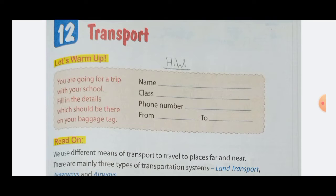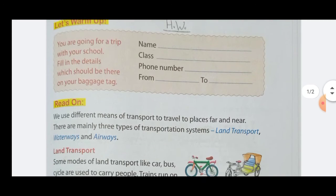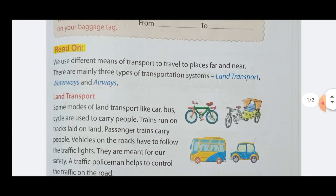Name, class, phone number, from, to — this is homework for you and you have to complete these fill-ups yourself. Read on: we use different means of transport to travel to places far and near.